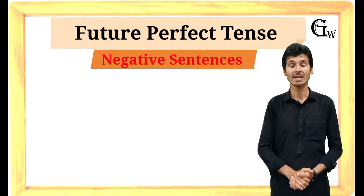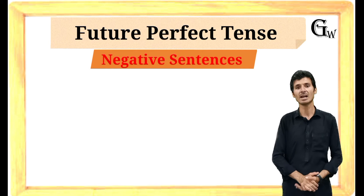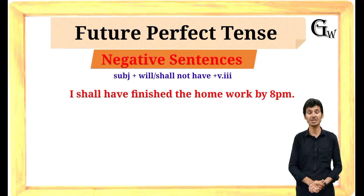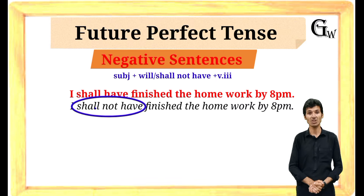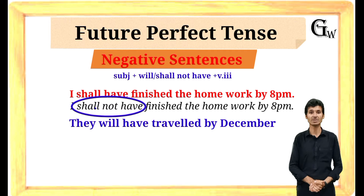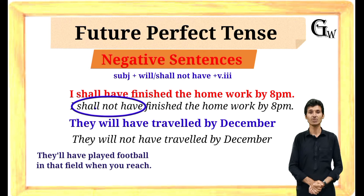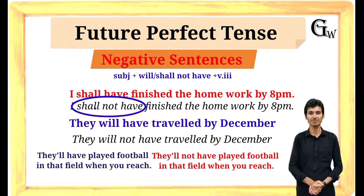Now let's move forward and learn how we make negative sentences. It is very simple — just add 'not' after 'will' or 'shall' and the sentence automatically becomes negative. For example: 'I will have finished the homework by 8 PM' becomes 'I will not have' or 'I shall not have finished the homework by 8 PM.' Again, 'They will have traveled by December' becomes 'They will not have traveled by December.' Similarly, 'They will have played football in that field when you reach' becomes 'They will not have played football in that field when you reach.' These are the examples — it is so simple, you can do it by yourself now.